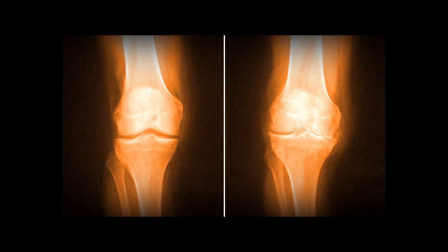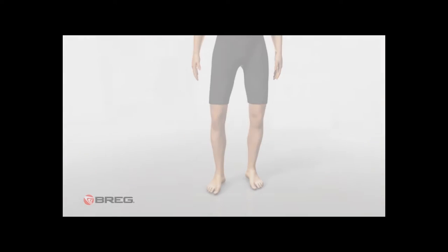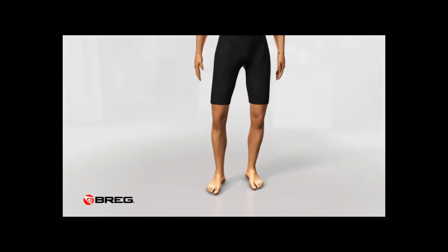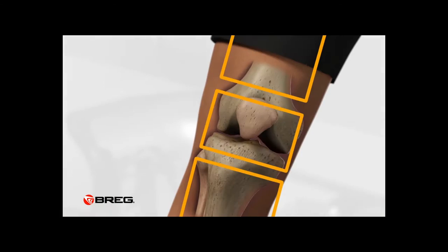These x-rays show the joint space in a normal knee compared to the narrow space in an osteoarthritic knee. When you stand or walk, the hip, knee, and ankle joints ideally should be vertically aligned, like stacked blocks.